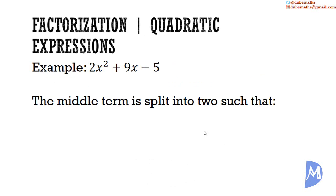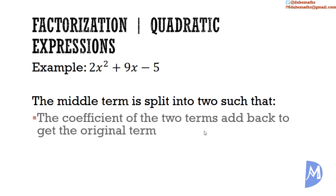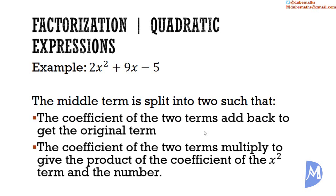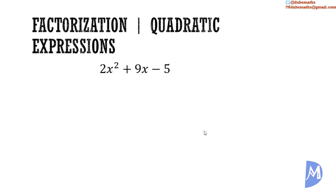We need to figure out what two numbers can add to give the coefficient of x but multiply to give the product of the coefficient of x squared and the number. So in this case, we need to find out what two numbers add to give positive 9 but multiply to give 2 multiplied by negative 5, which is equal to negative 10. The fastest way is to list all the factors of negative 10 and then choose the correct pair from the list.